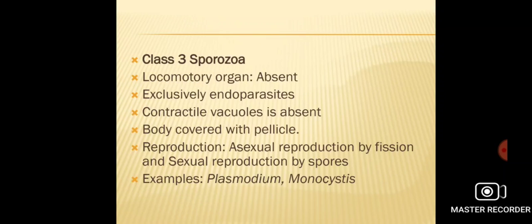In Sporozoa, contractile vacuoles are absent and the body is covered with a pellicle. Reproduction takes place both sexually and asexually. Asexual reproduction takes place by fission and sexual reproduction takes place by spores. Examples of Sporozoa are Plasmodium, Monocystis, etc.